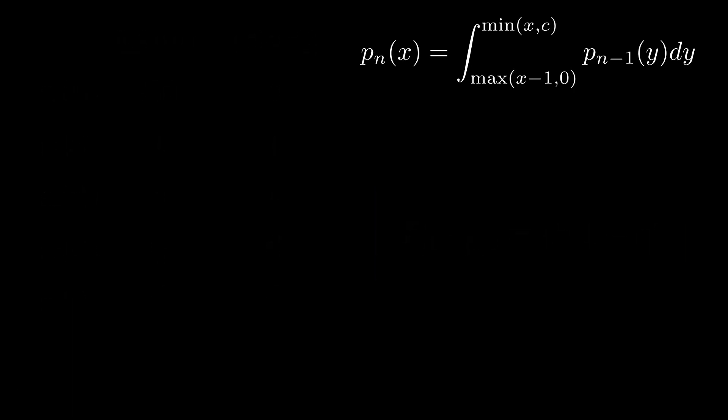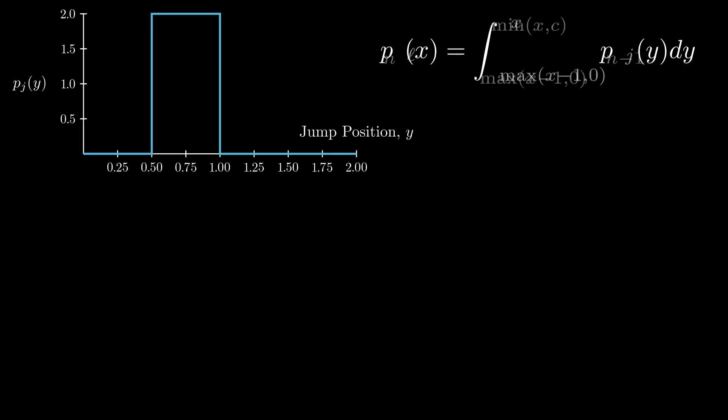This calculation also sets us up to understand the landing distribution assuming we jump. It shows that we jump uniformly from all positions in the jumping range. Additionally, we can use nearly the same integral expression to calculate the probability we land at x assuming we jump.